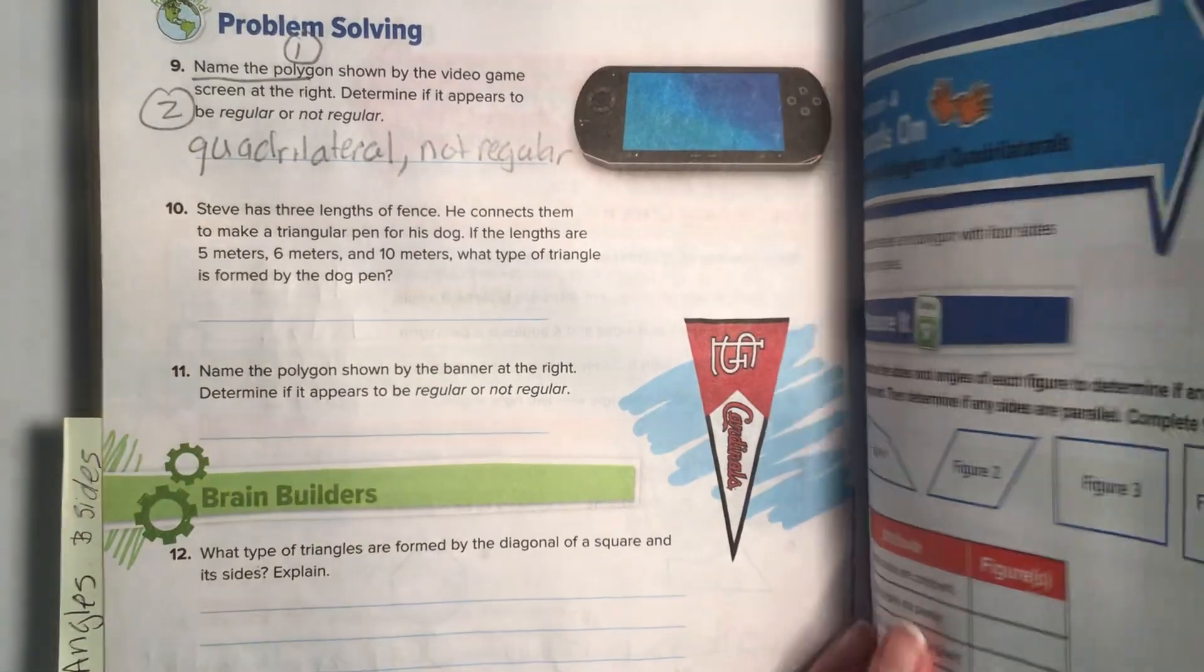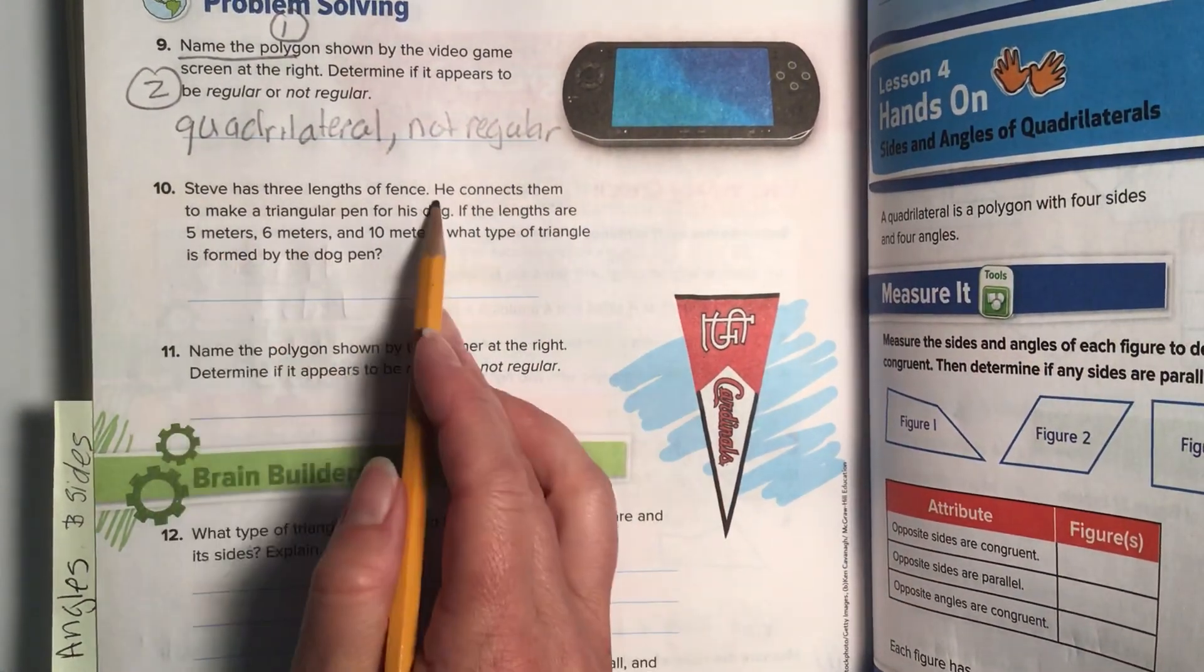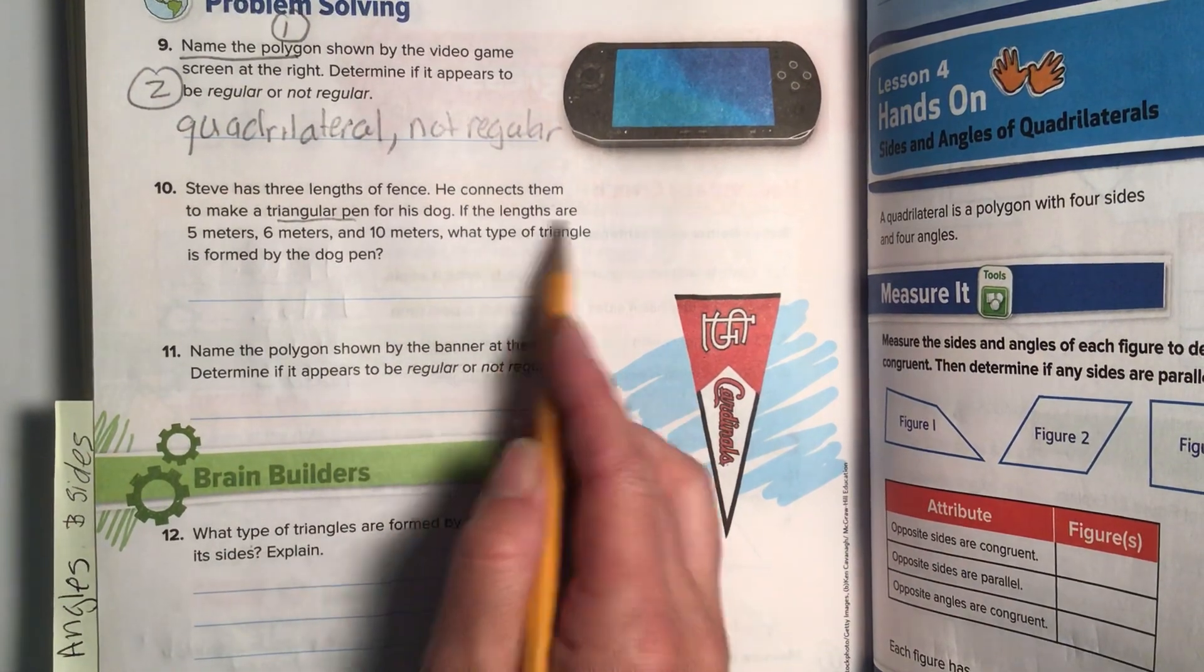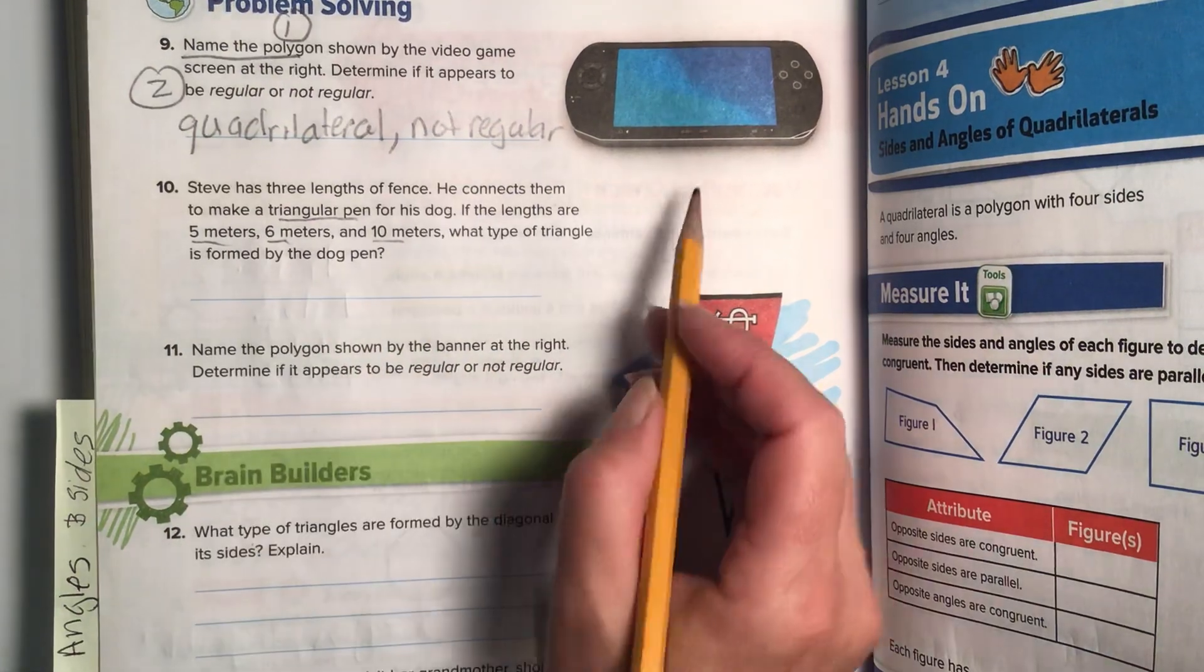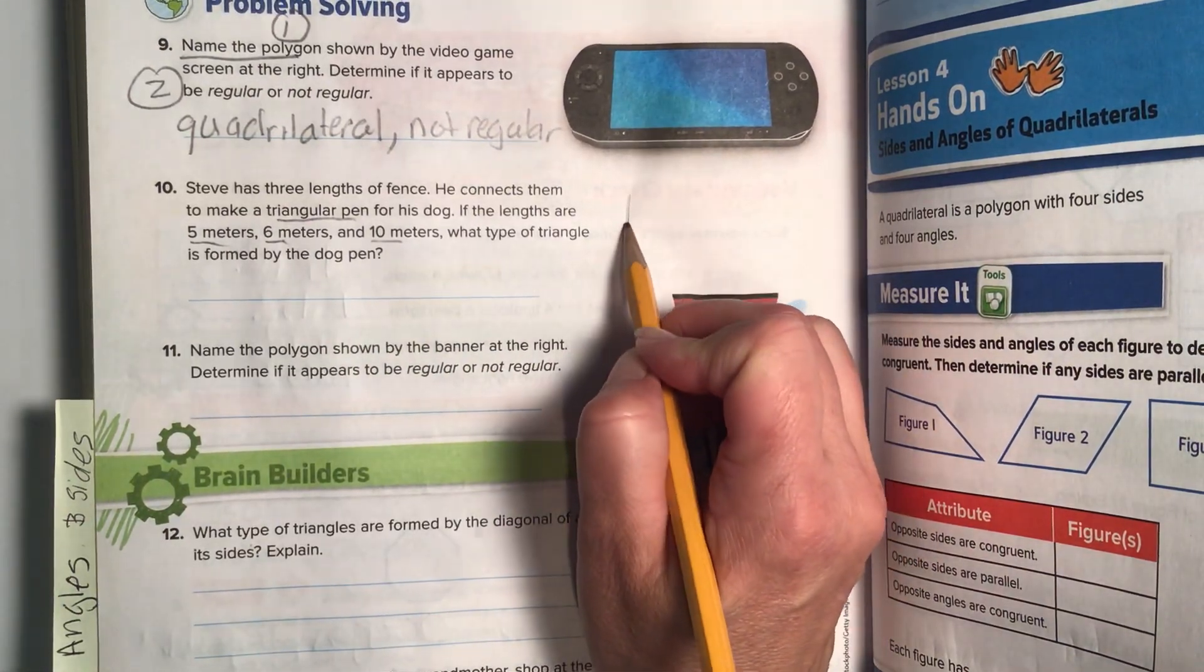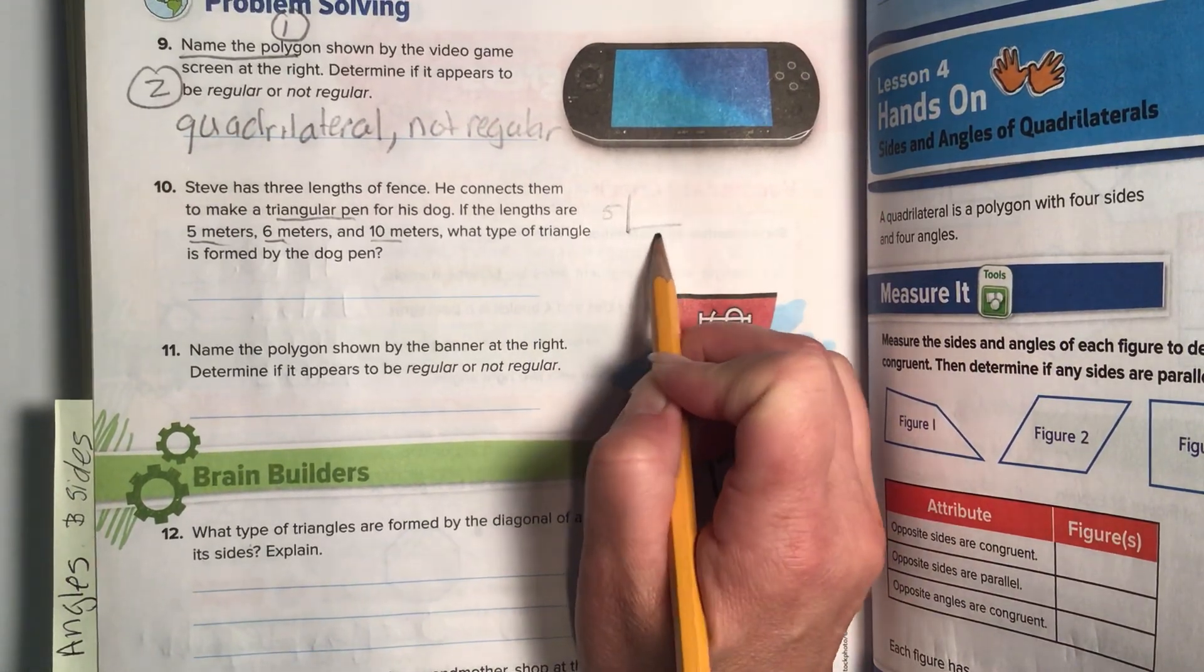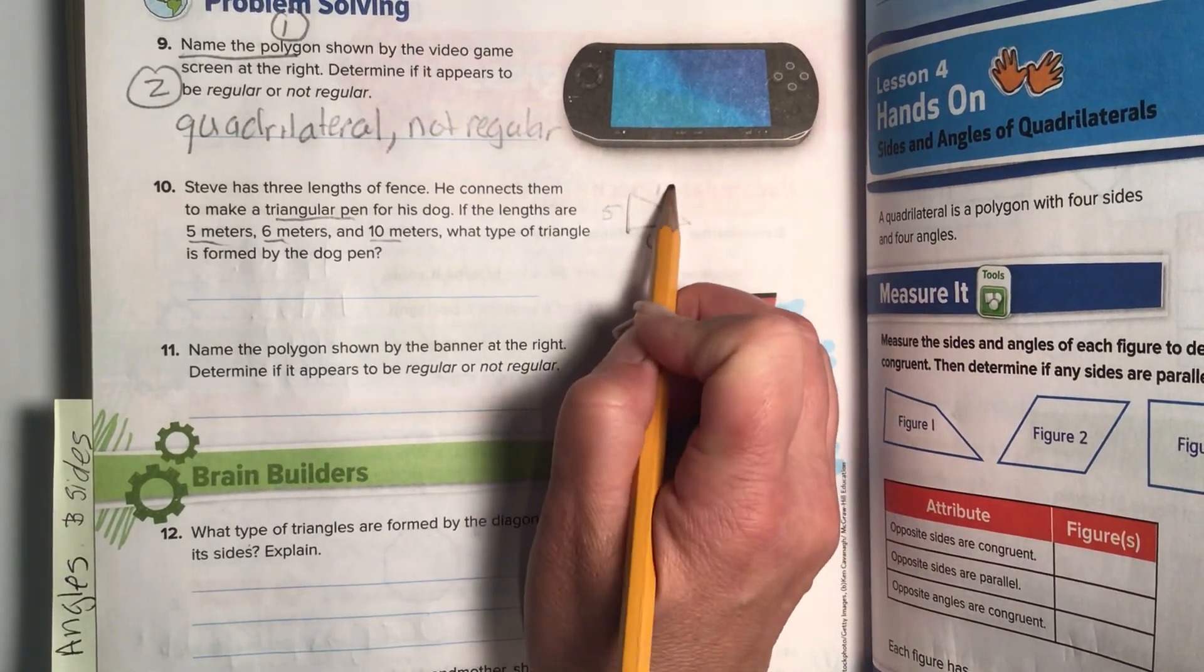Okay, nicely done. Let's go to number ten. Steve has three lengths of fence. He connects them to make a triangular pen for his dog. If the lengths are five, six, and ten, what type of triangle is formed by the dog pen? Let's kind of draw it. We don't have to be super picky. So, this one will be about five. This one will be about six. And we'll say this one is about ten.